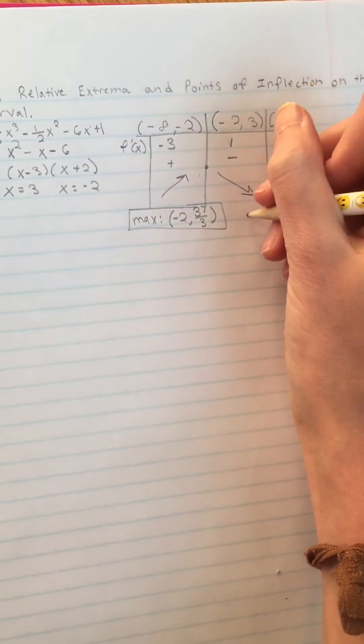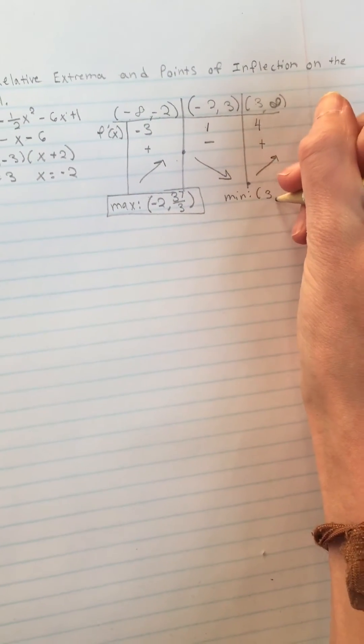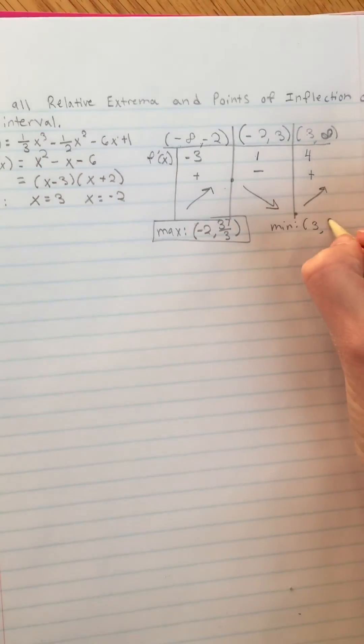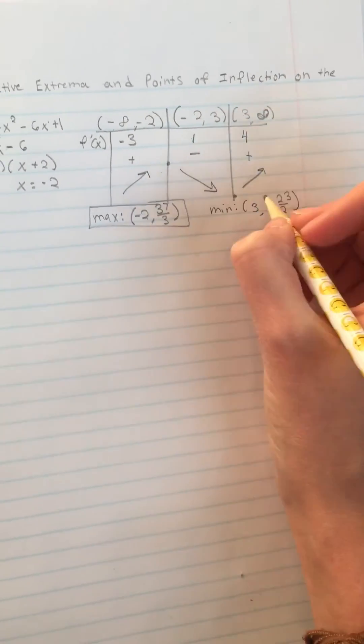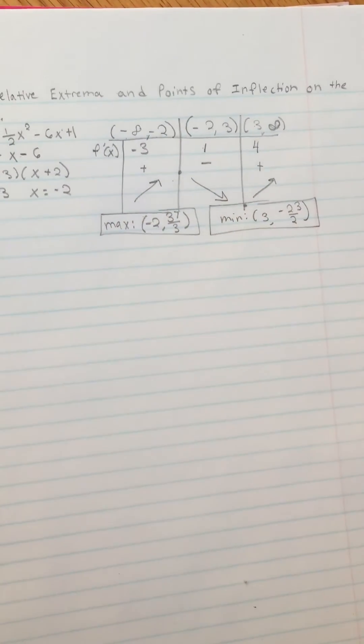And to find the minimum, you do the same process. Use this 3 here, and then when you plug that back into the original, you're going to get negative 23 over 2. And it doesn't matter that they're really weird fractions because we don't need to use them for anything else—we just need to find the exact points.